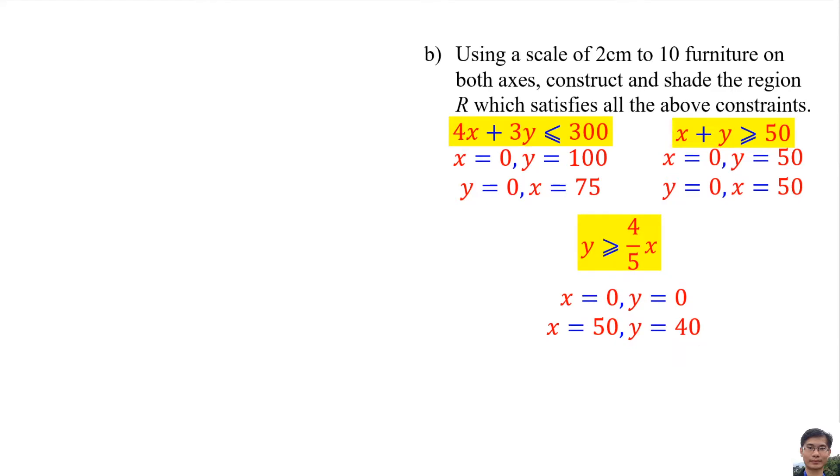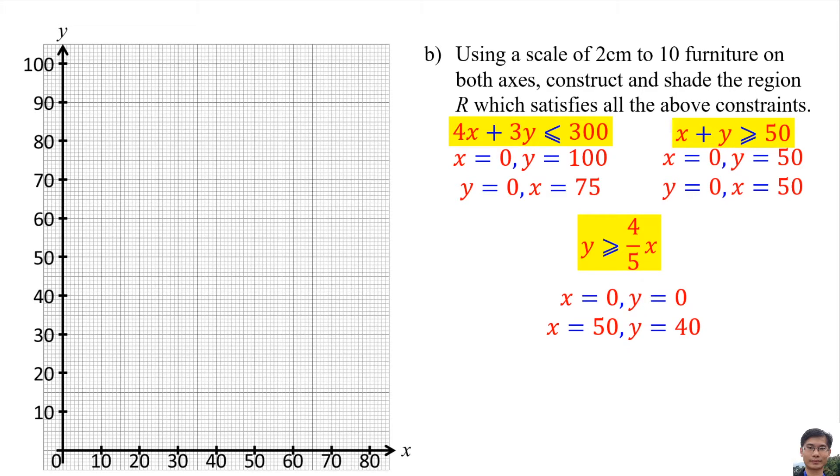After that, we plot the 6 points and draw the 3 lines. Connect both points. So this line is for X plus 3Y equals 300. Less than or equal means below this line, so this part.